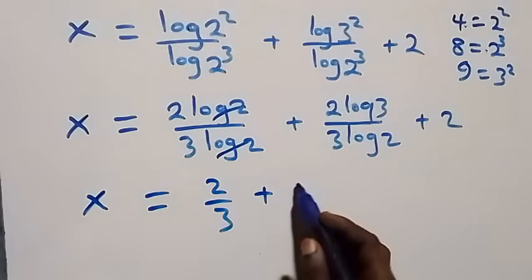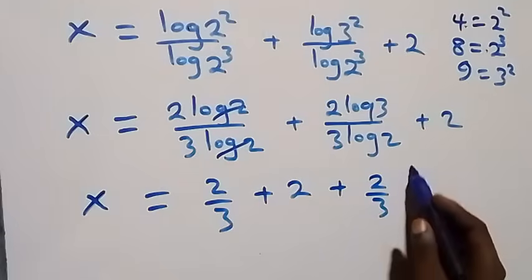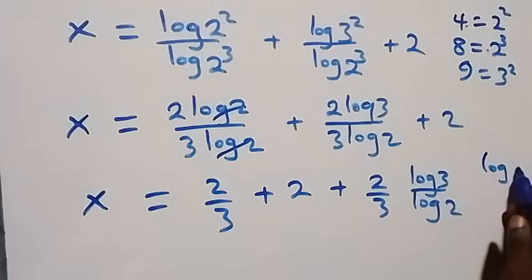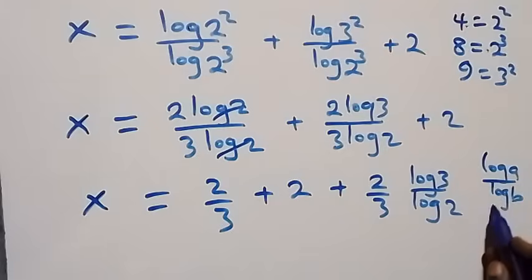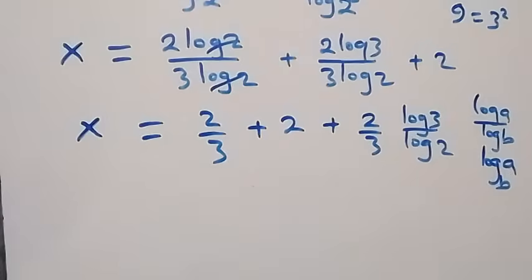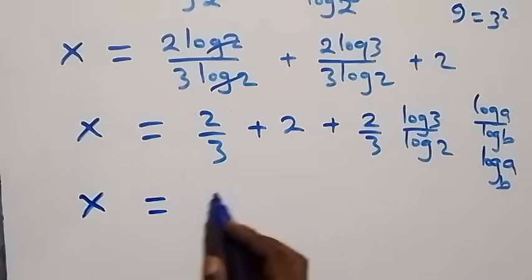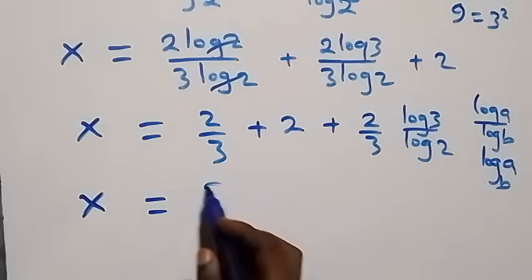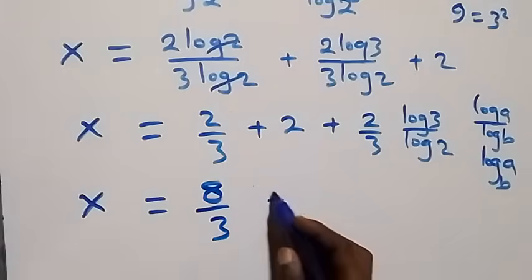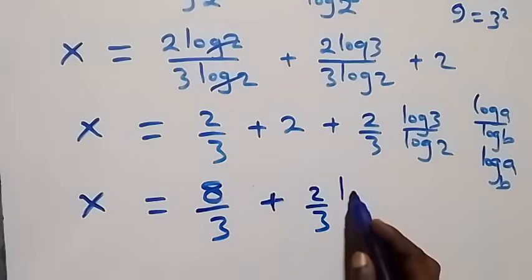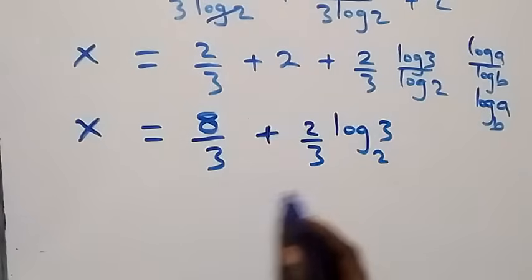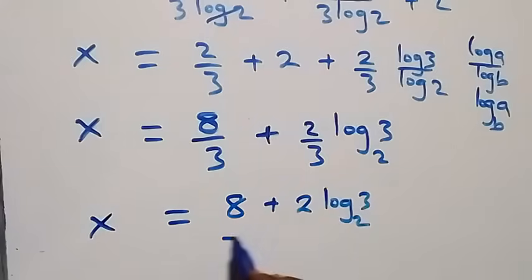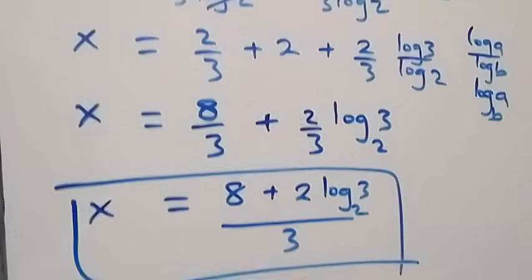Applying the power law and change of base, log 2 squared over log 2 cubed gives 2 over 3, and log 3 squared over log 2 cubed gives 2 over 3 times log 3 base 2. So x equals 2 over 3 plus 2 over 3 log 3 base 2 plus 2, which becomes x equals 8 over 3 plus 2 over 3 log 3 base 2. Since 3 is common, x equals 8 plus 2 log 3 base 2, all over 3.